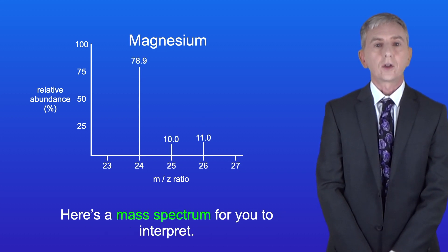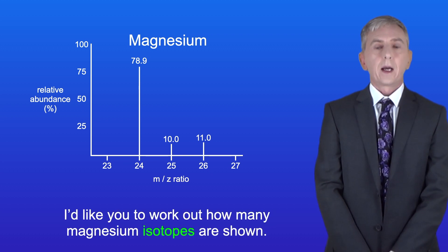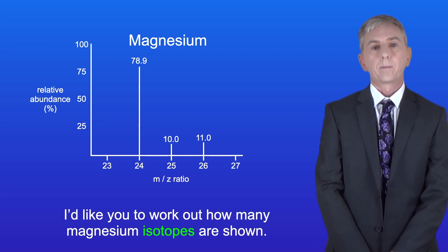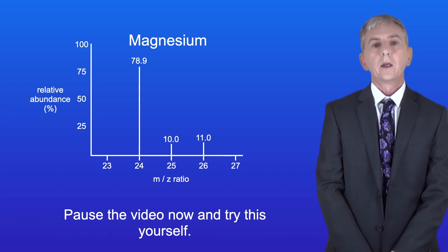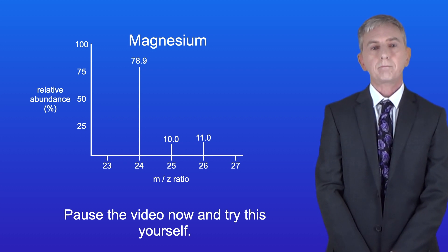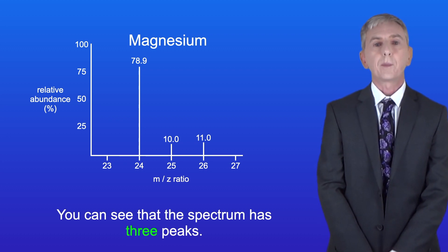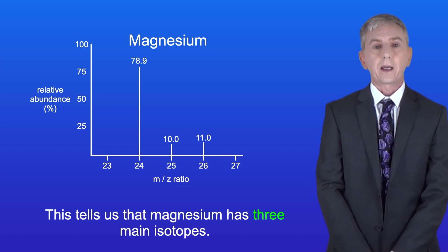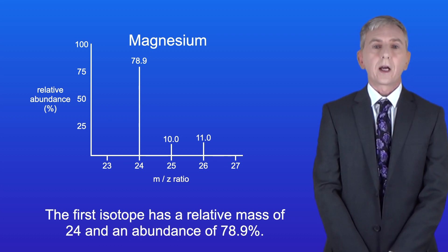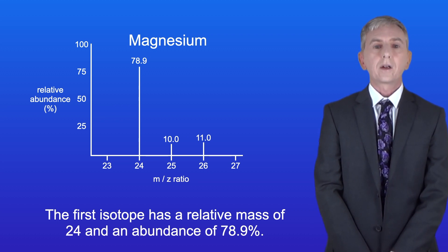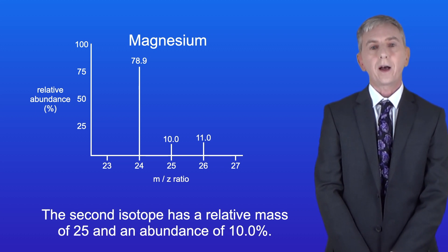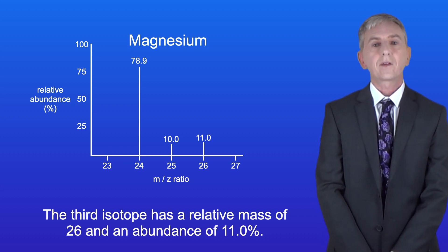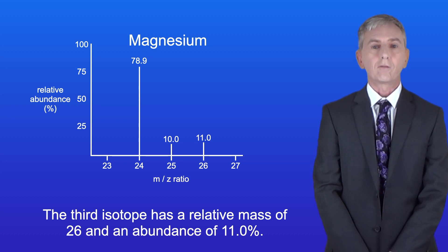Here's a mass spectrum for you to interpret — this is for the element magnesium. Work out how many magnesium isotopes are shown, then work out the relative masses and abundances of each isotope. The spectrum has got three peaks, telling us that magnesium has three main isotopes. The first isotope has a relative mass of 24 and an abundance of 78.9%. The second has a relative mass of 25 and an abundance of 10.0%. The third has a relative mass of 26 and an abundance of 11.0%.